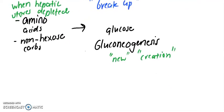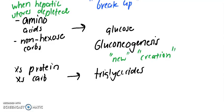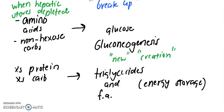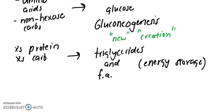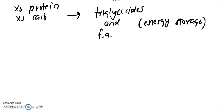Your liver can also take excess protein and excess carbs, and it could store it as triglycerides and fatty acids. This is for energy storage in your adipose tissue.